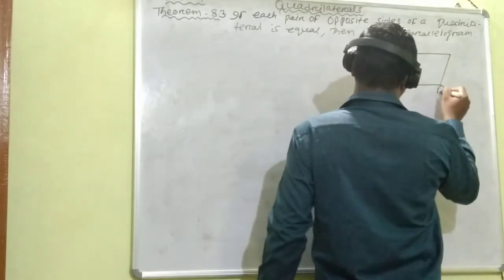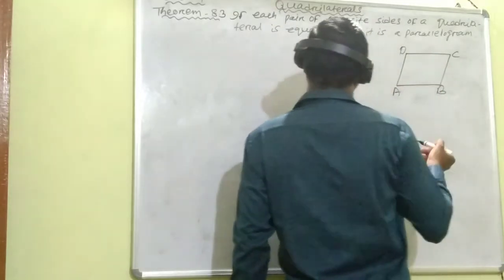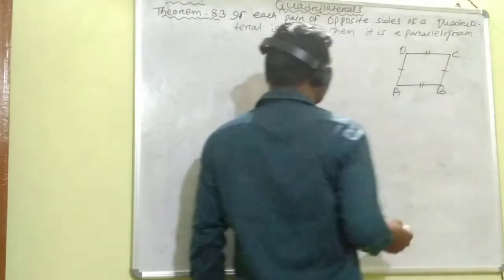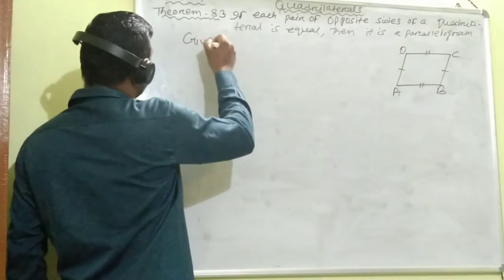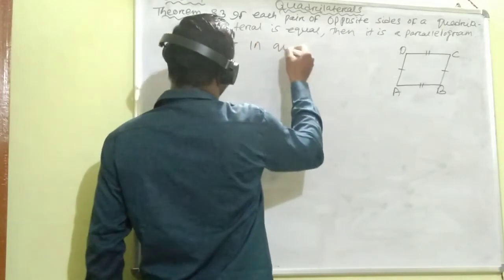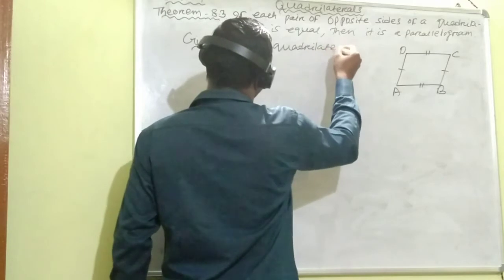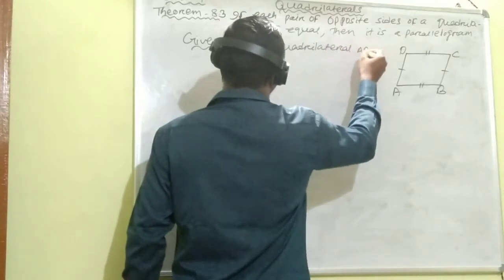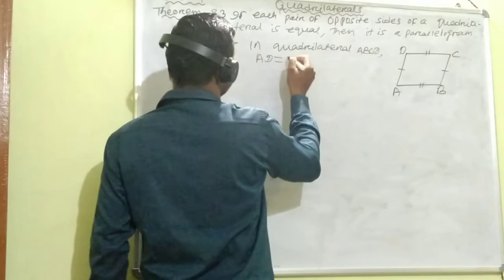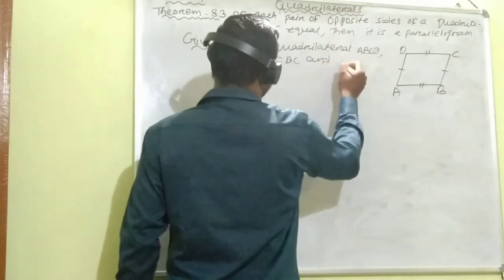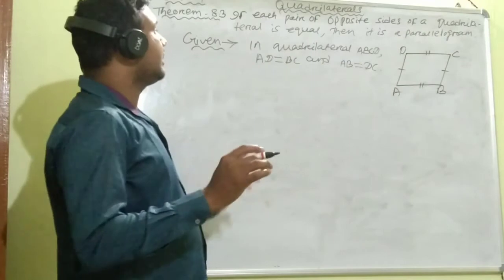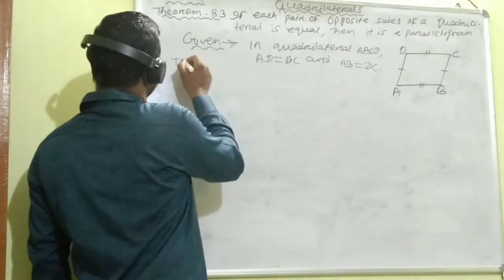This is quadrilateral ABCD where the opposite sides are equal. So what we'll write in given? In quadrilateral ABCD, AD equals BC and AB equals DC. We have to prove ABCD is a parallelogram, so write down 'To prove'...